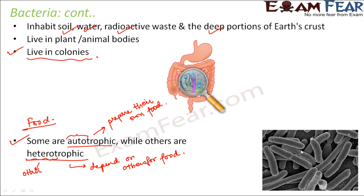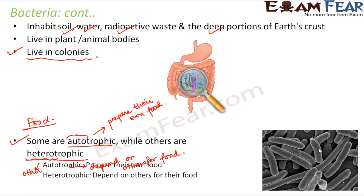This picture shows how bacteria actually look when seen under a high-power microscope. You can see some rod-shaped, cylindrical structures — those are the bacteria. But when you see them with your naked eye, you will not be able to see them at all. So autotrophic means preparing their own food, and heterotrophic means depending on others for their food. This was the first classification of microbes.